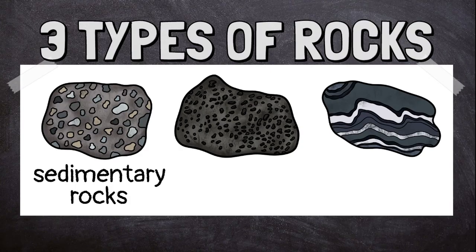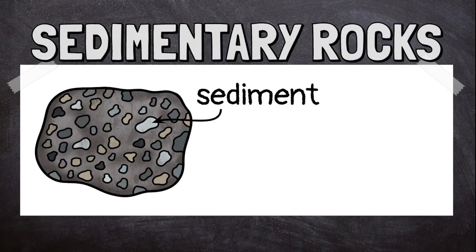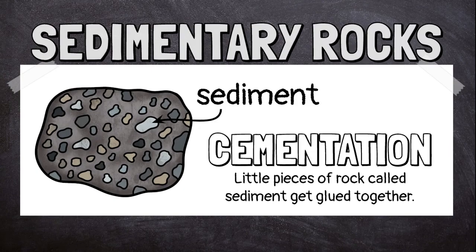Sedimentary rocks are formed when small, broken-up pieces of other rocks, called sediment, get glued together. This process is called cementation.